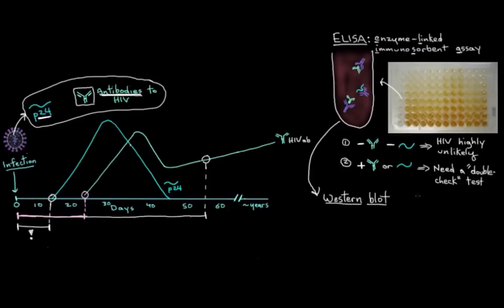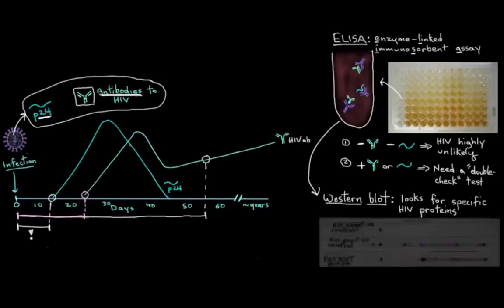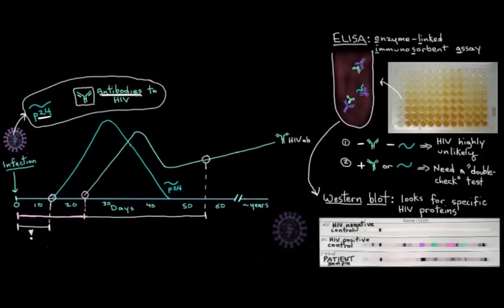This Western blot test specifically tests your blood for actual viral proteins. Let's say this is our Western blot testing strip here. We're essentially looking for the presence of some of the proteins that are on the viral envelope. Maybe some GP120 or some GP41 and so on. We also look for specific proteins that HIV makes. For example, some of its enzymes like its reverse transcriptase or its integrase. The Western blot test is just a double-check that can detect for actual viral proteins to make sure it's HIV and not something else that's giving you a positive ELISA test result.